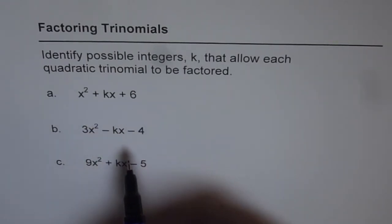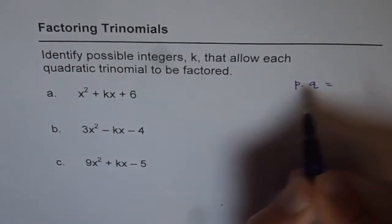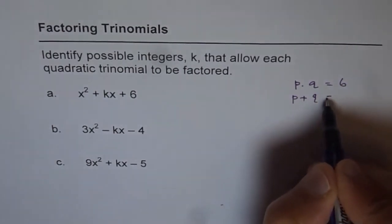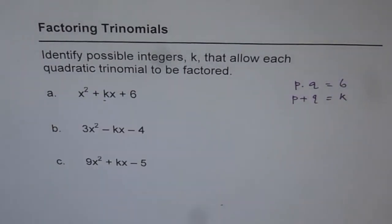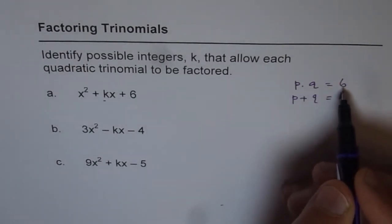Now for this trinomial to be factored, what are we looking for? We are looking for two numbers whose product should be equal to 6 and whose sum should be equal to the value k. So all the combinations whose product is 6, positive 6, should give us k value.